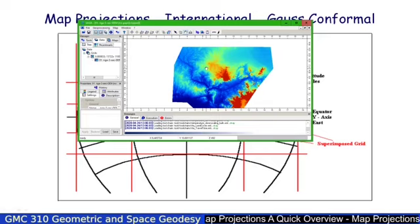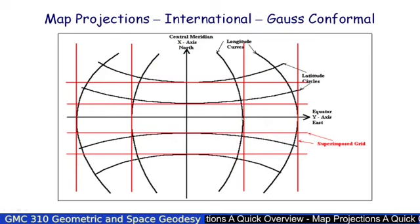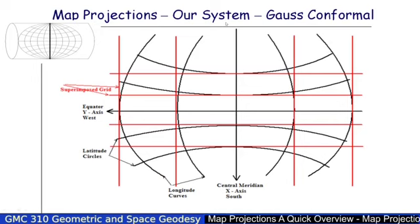Which makes things slightly confusing. That's why I tend to stick to Northings and Eastings. Then I know Northings go north, Eastings go east. And if I go to the South African system, Northings go north, Eastings go east.